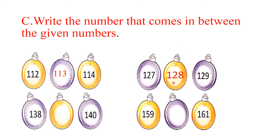Now you all know how to find between numbers. Let's move on to the next example: 138 and 140. Can you guess which number comes in between these two numbers? It is 139. Next: 159 and 161. The number that comes in between 159 and 161 is 160.